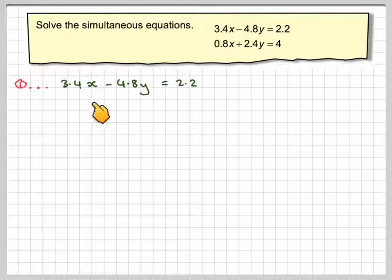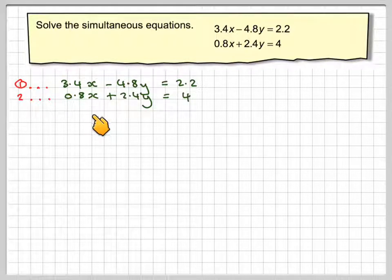So 3.4x minus 4.8y equals 2.2, we'll call that equation 1. And equation 2, we'll call 0.8x plus 2.4y equals 4.